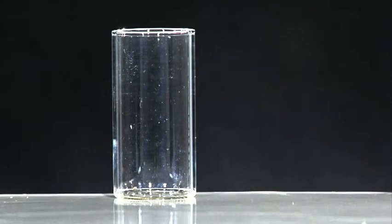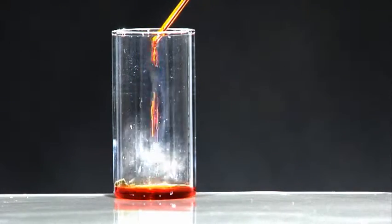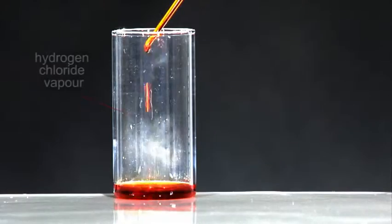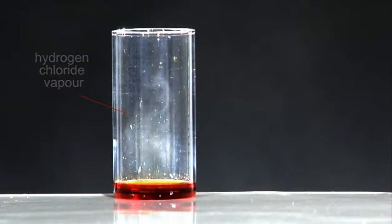Disulfur dichloride is an evil-smelling yellow-orange liquid. It reacts immediately with moisture in the air, forming a number of products.